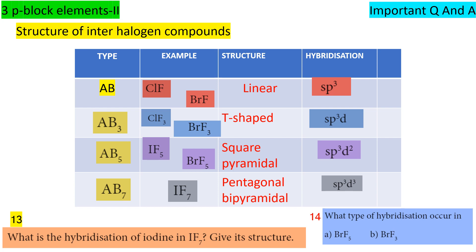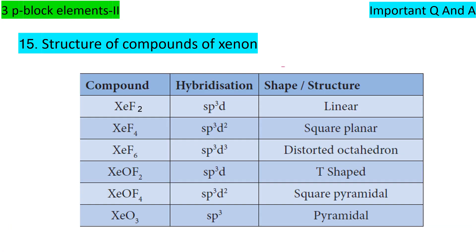The structures of xenon compounds — very important table. XeF₂: SP3D, linear structure. XeF₄: SP3D2, square planar structure. XeF₆: SP3D3, distorted octahedral structure. XeOF₂: SP3D, see-saw shape. XeOF₄: SP3D2, square planar. XeO₃: SP3, pyramidal (ammonia-like) shape.